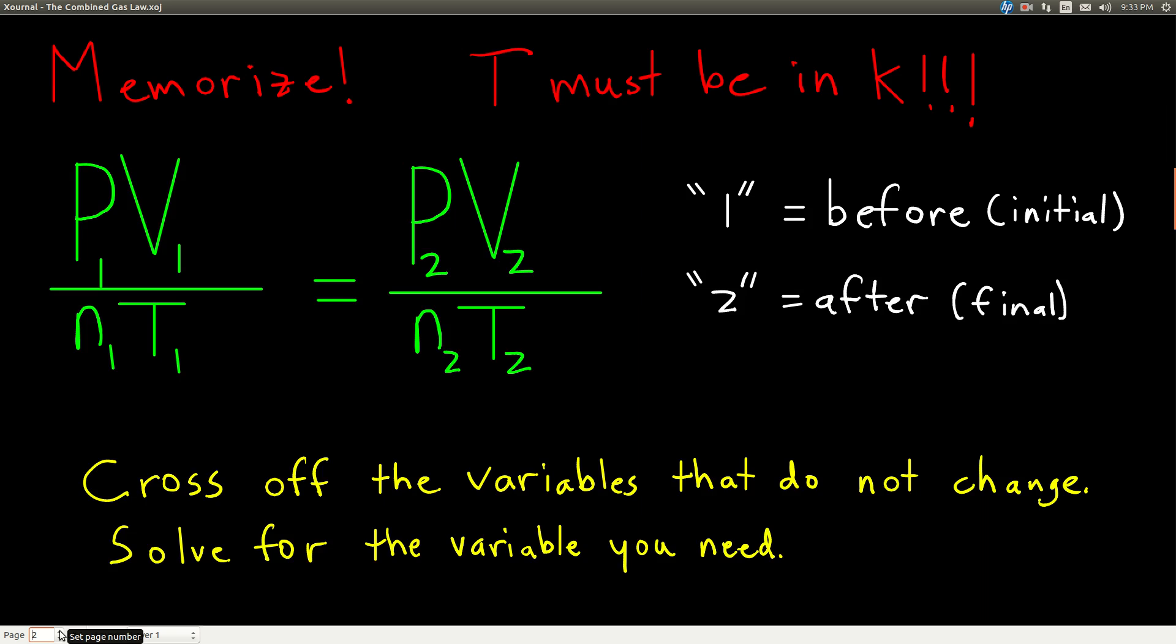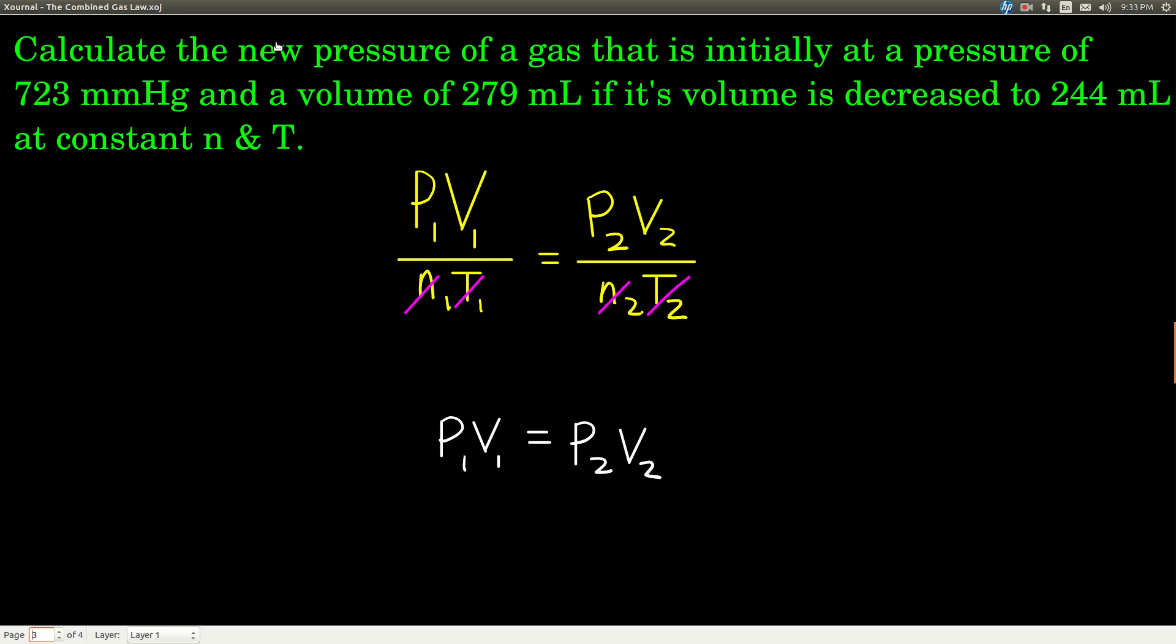So let's do an example with the combined gas law problem. So we're reading this problem. It says calculate the new pressure of a gas that is initially at a pressure of 723 millimeters of mercury. Right there, if you come upon this problem out of the blue on a test or some homework, right there, you know that this is a combined gas law problem because something's changing. You have an initial pressure, 723 millimeters of mercury, and you're trying to find the new pressure. So the pressure's changing. And so it's initially at a pressure of 723 millimeters of mercury and a volume of 279 milliliters. So both those numbers, 723 and the 279 are the initial pressure and volume. So those are the P1 and the V1.